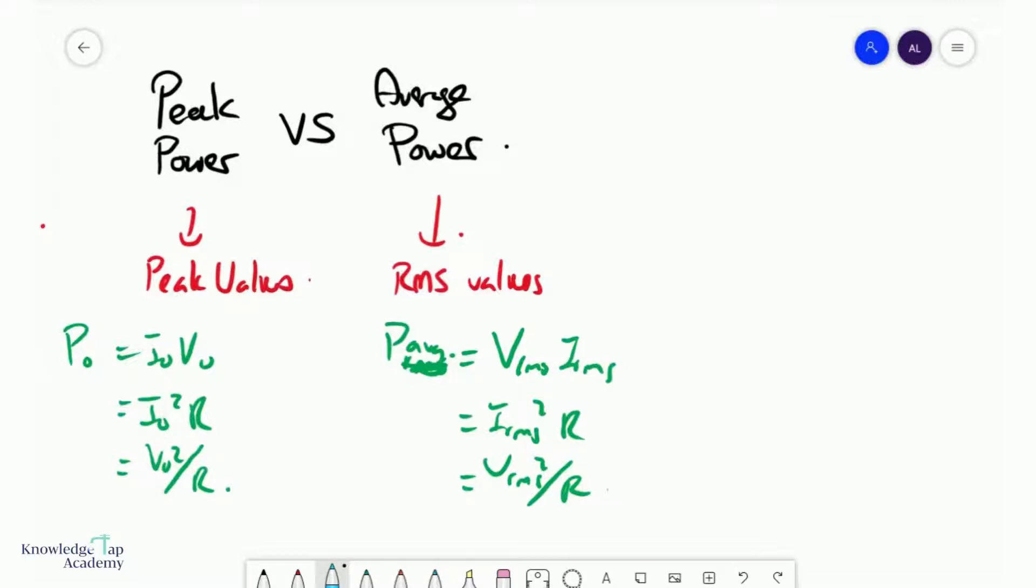Remember that the RMS voltage in a sinusoidal source is its peak over square root two, and the RMS current is also the peak current over square root two.